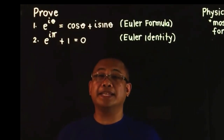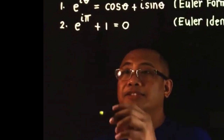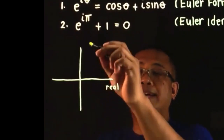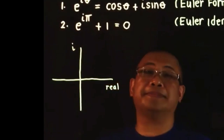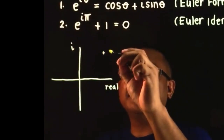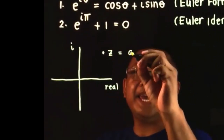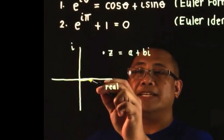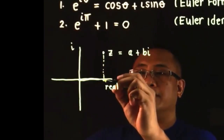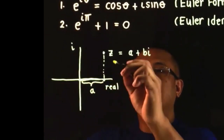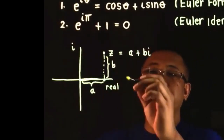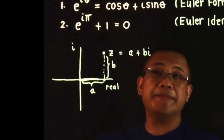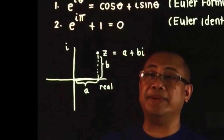Let's begin by recalling how to represent a complex number in a complex plane. Let's draw a Gaussian plane. In this plane, the horizontal axis is for the real numbers, and the vertical axis is for the imaginary numbers. If you have a point Z on this complex plane, we represent Z as A plus Bi, where A is the distance from the origin to this point along the real axis, and B is the length along the imaginary axis, written as Bi.